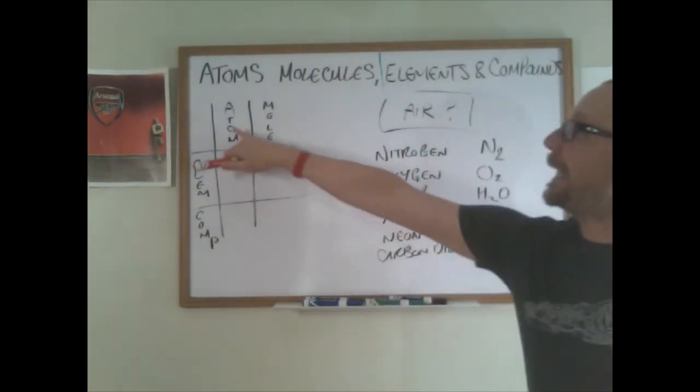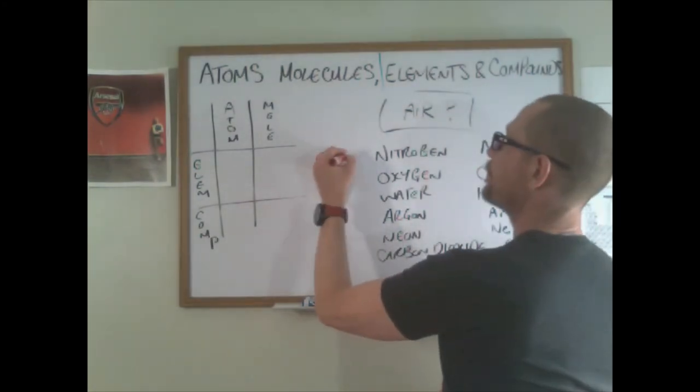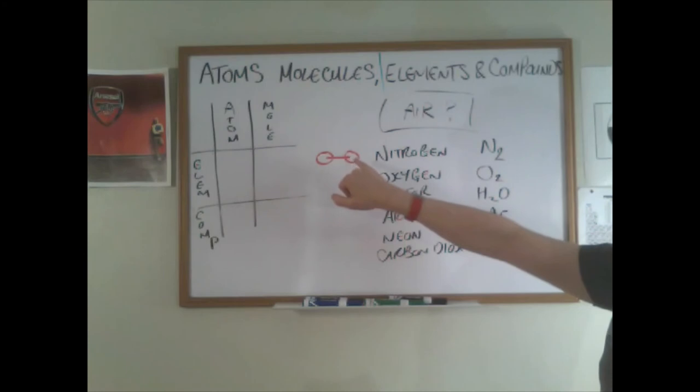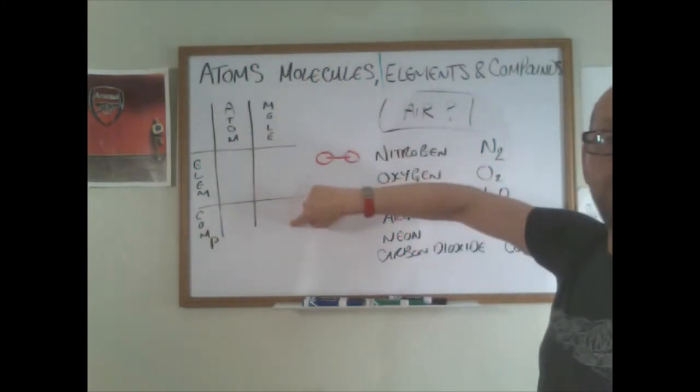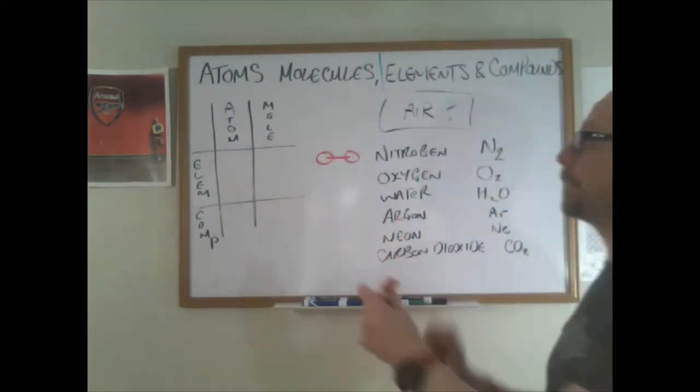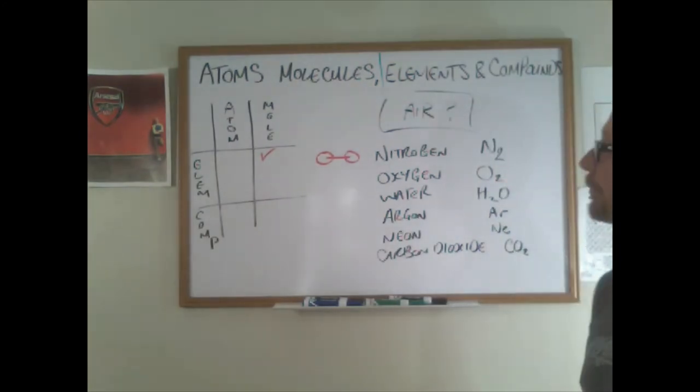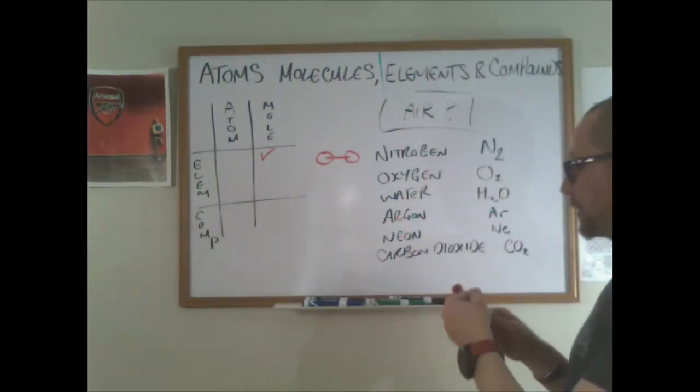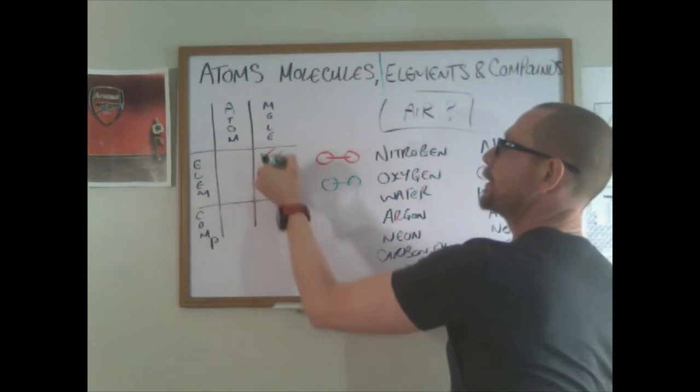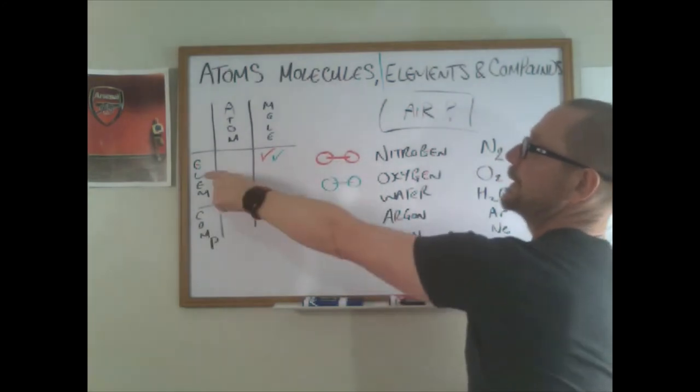So nitrogen N2, atom or molecule? Has to be a molecule because this little subscript here means it's two N's bound together. Take a look at it, N2, it's two N's bound together. Atom or molecule? It's a molecule. Is it an element or is it a compound? Nitrogen N2, it's made of exactly the same stuff. It's an element. So nitrogen is a molecular element.